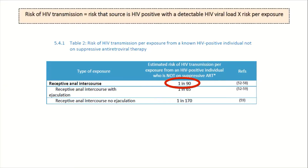The risk of transmission equals the risk that the source is HIV positive with a detectable HIV viral load, times the risk per exposure. Using the table from the BASH guidelines, you can see that the estimated risk of HIV transmission per exposure from an HIV positive individual who is not on any suppressive antiretroviral therapy during receptive anal intercourse is 1 in 90.